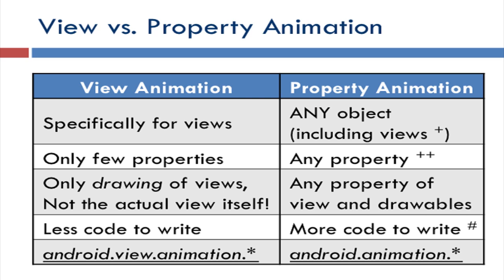What does 'any property' mean? In view animation, if you run the demo, only the drawing of views will be animated. For example, he showed a demo where a text view was being translated. However, if you use a button instead, you will notice that only the drawing of the button gets animated, not the actual button. All the event listeners will stay in the original position, so you can't touch the button at its translated location — you have to touch its original position.